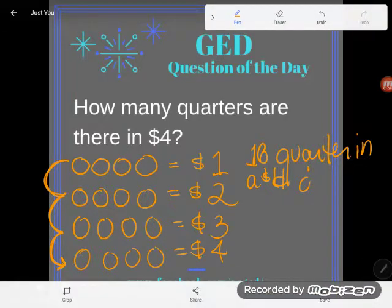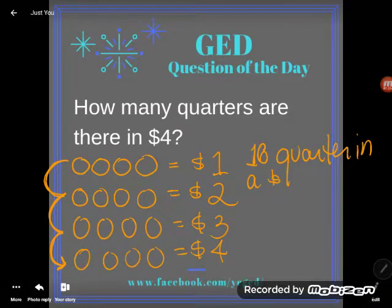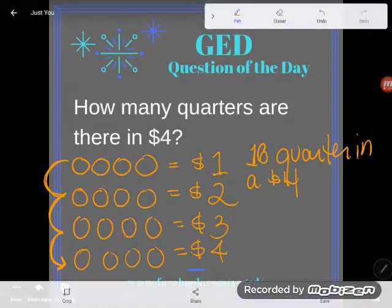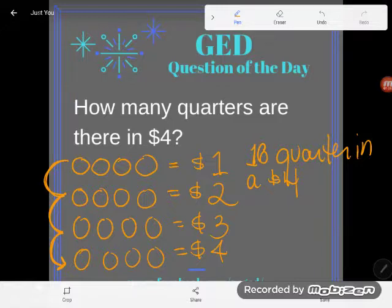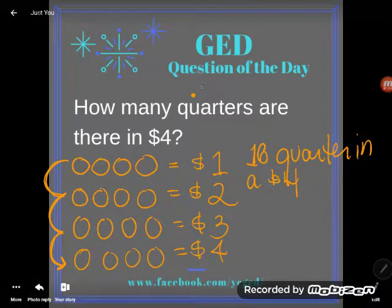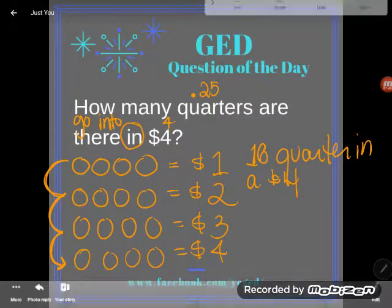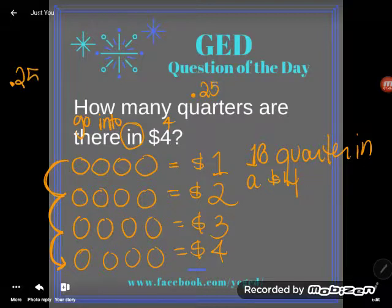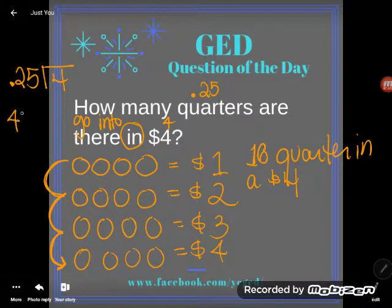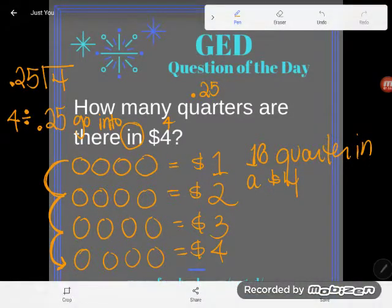And yet, when I write this purely mathematically without the context of money, you guys do screw it up. Let me write this mathematically. How many quarters are there in four dollars? I'm asking: how many times does 0.25 go into — see that word 'into' — four. How many times does 0.25 go into four? Or another way of thinking about it: what is four divided by 0.25? How many quarters are there inside of four dollars?